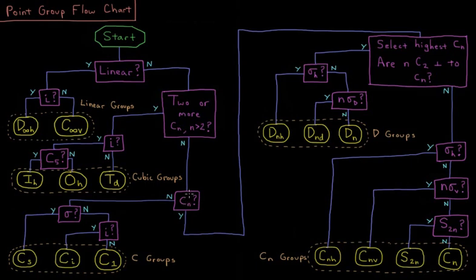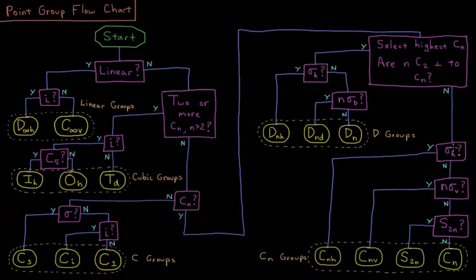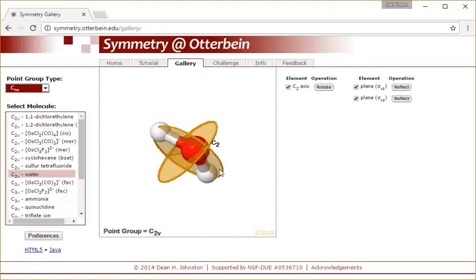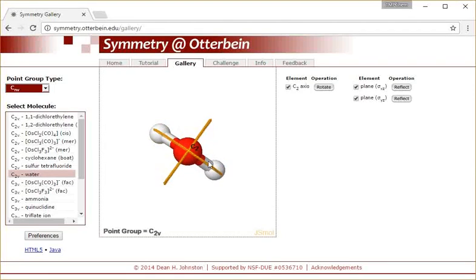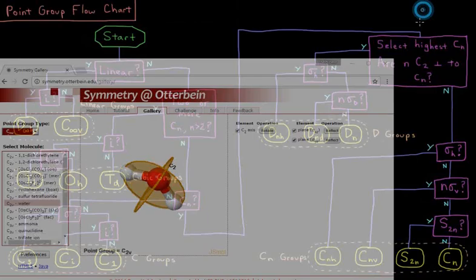Does it have a principal axis? Yes, it has a C2. Are there two C2s perpendicular to my principal C2? They're not. There are only the one C2. Does it have a mirror plane perpendicular to that principal axis? It does not. They're both parallel to the principal axis,